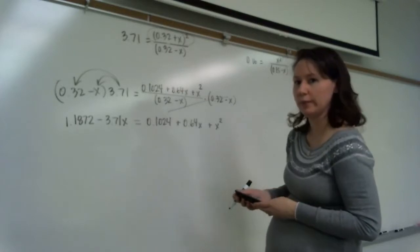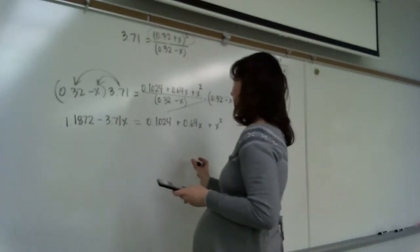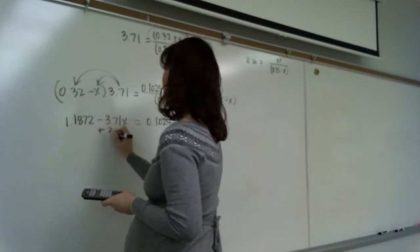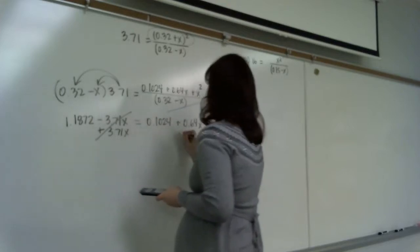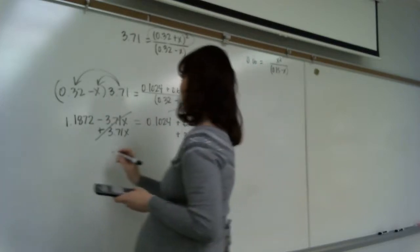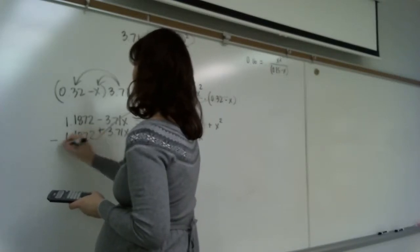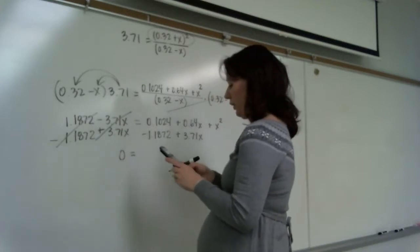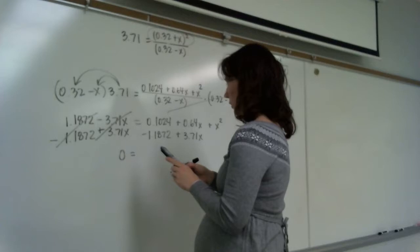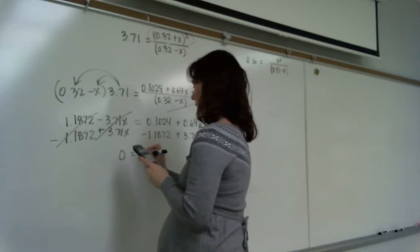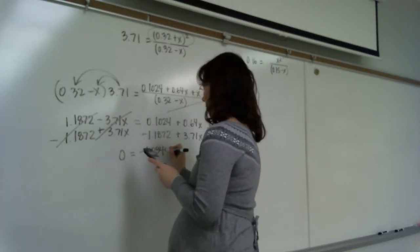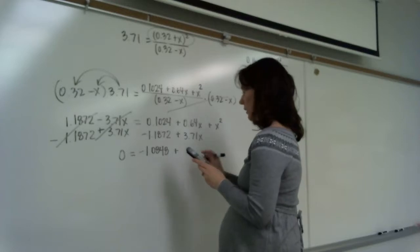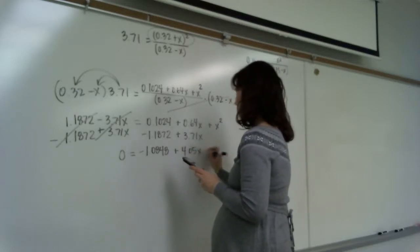Now we're going to combine like terms. Let's get all the x terms over to one side to put it into quadratic form. We add 3.71x to both sides and subtract 1.1872 from both sides. So we get 0 equals x² plus (0.64 + 3.71)x plus (0.1024 − 1.1872), which gives 0 = x² + 4.35x − 1.0848.